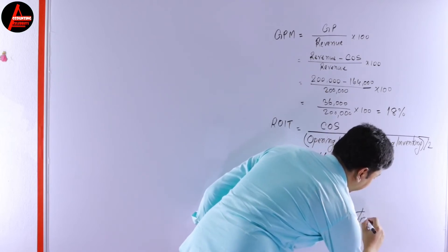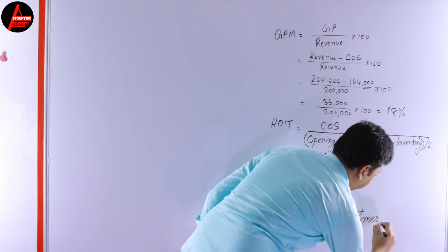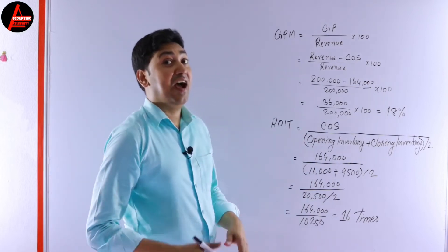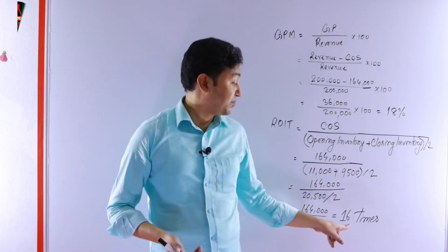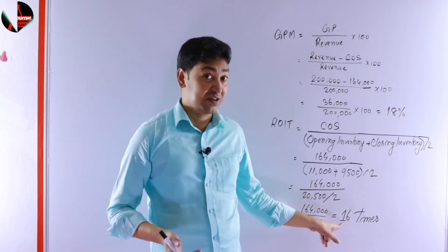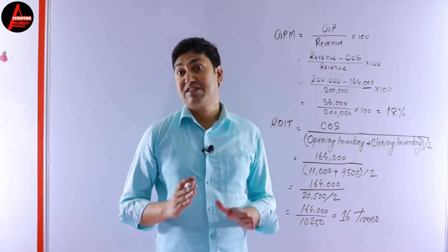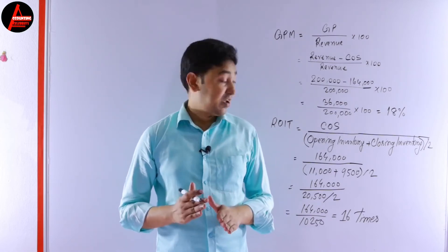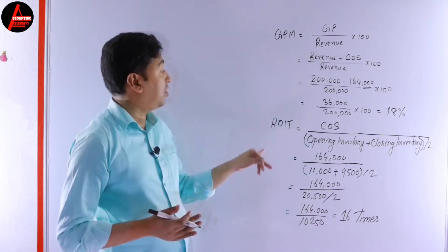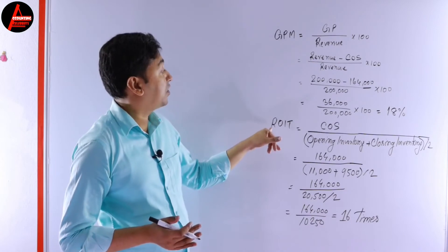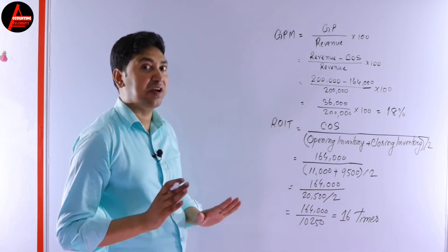So the unit here is 16 times. A lot of students write percentage here, but that is incorrect — the unit is times. So the rate of inventory turnover is done.